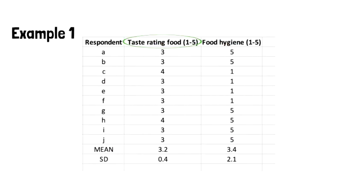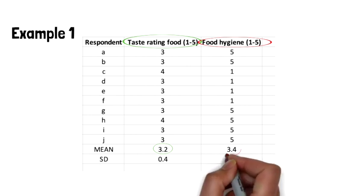For example, if you ask respondents to rate the taste of food and food hygiene on a five-point grading scale, you will see that the mean for a group of 10 respondents for taste of food was 3.2, whereas the mean for hygiene was 3.4.